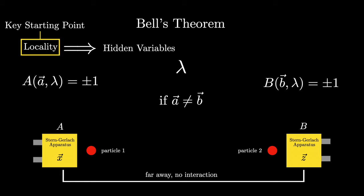So you could get plus one plus one, plus one minus one, minus one plus one, or minus one minus one. And the product can be either plus one or minus one. Here's where Bell's incredible insight comes in.